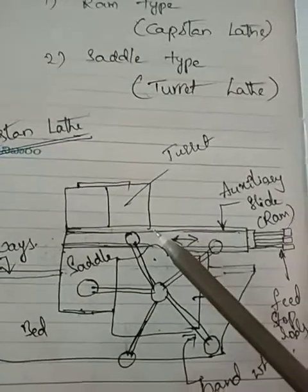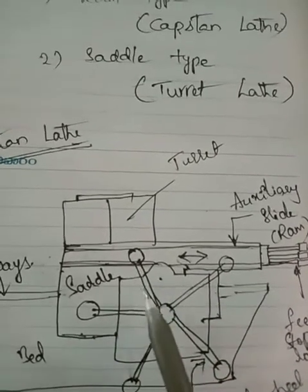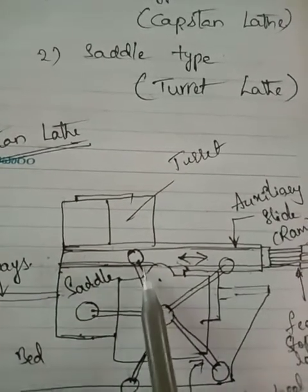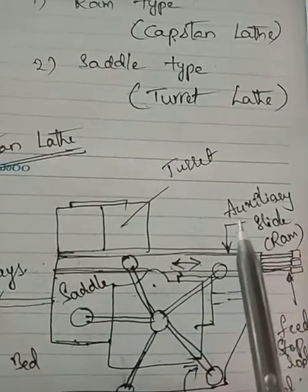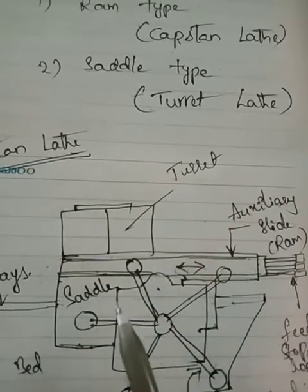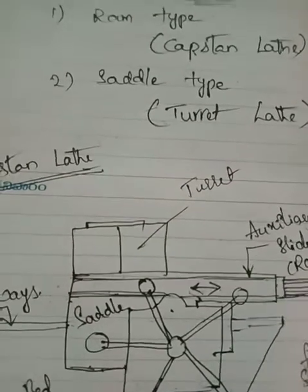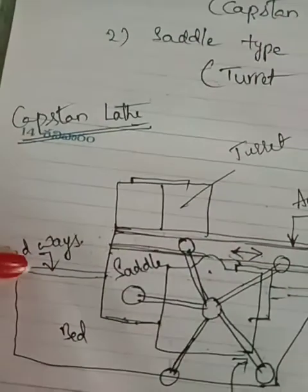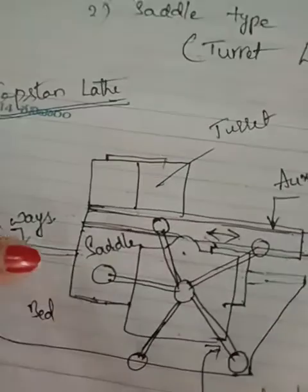In the case of capstan lathe, as discussed in our last class, the turret saddle top face is accurately machined. The saddle should be accurately machined, and the auxiliary slide should provide linear movement. We provide a bearing surface for the auxiliary slide. The saddle may be adjusted on the lathe bed and clamped at a particular position on the bed ways.